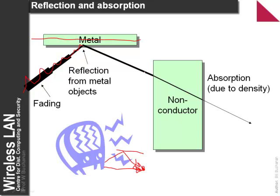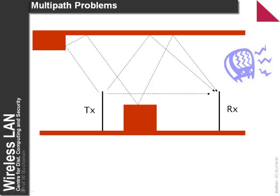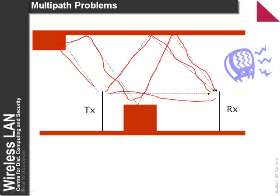Another problem is absorption. Rather than being reflected from a non-conductor, the radio wave will generally go through it but then be absorbed within the non-conductor, so the signal strength reduces as it passes through — this is typically related to the density of the material. Multipath is caused where we can have different paths from a transmitter to a receiver. Each path will take a different time for the radio wave to propagate, each propagating approximately at the speed of light. If they all arrive in phase, they will be summative; if they arrive out of phase, they can cancel each other out.